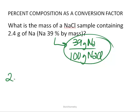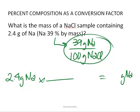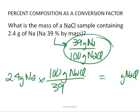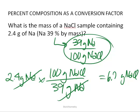If we have 2.4 grams of sodium and we want to figure out how many grams of sodium chloride we have, we just use that conversion factor in reverse so that we can cancel out sodium and get grams of sodium chloride. In 100 grams of sodium chloride, we have 39 grams of sodium, so grams of sodium cancel out, giving us 6.2 grams of sodium chloride.